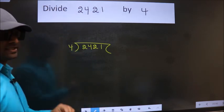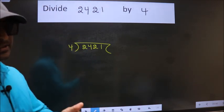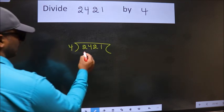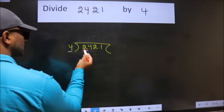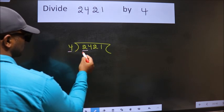This is your step one. Next, here we have 2. Since 2 is smaller than 4, we should take two numbers: 24.